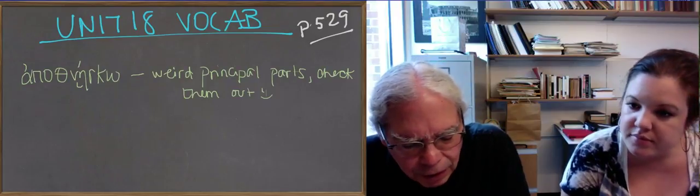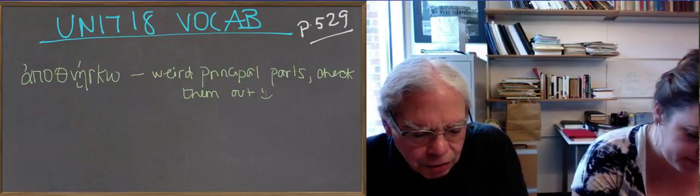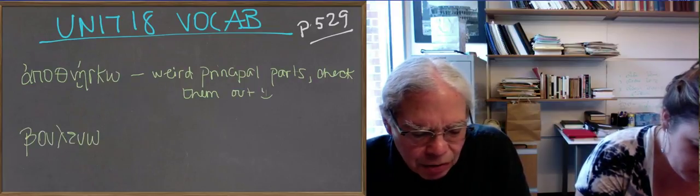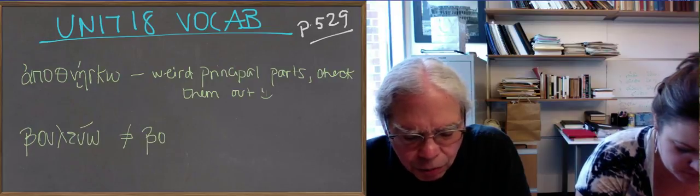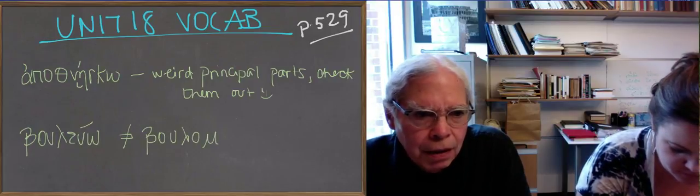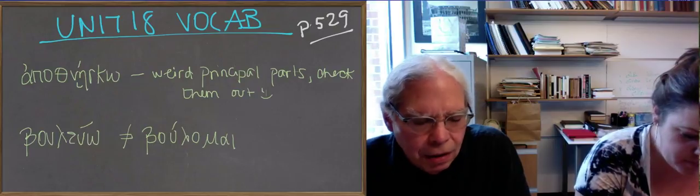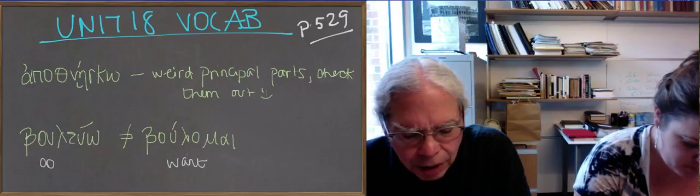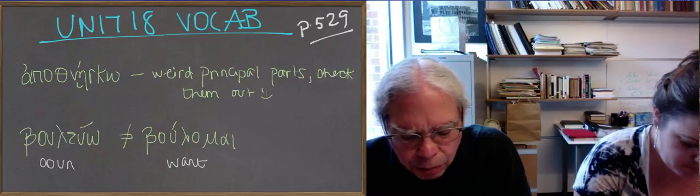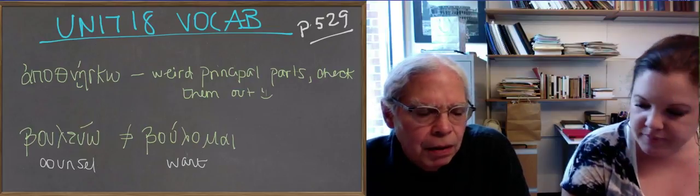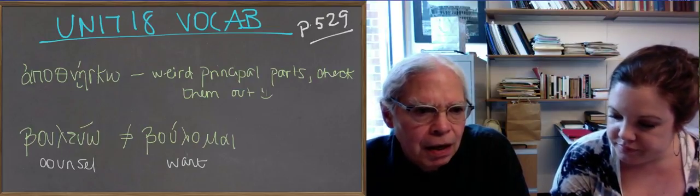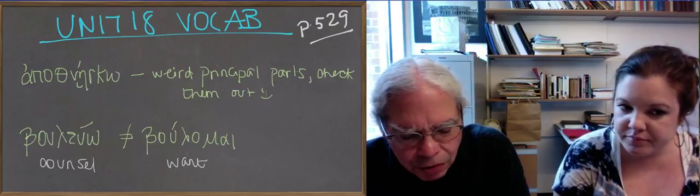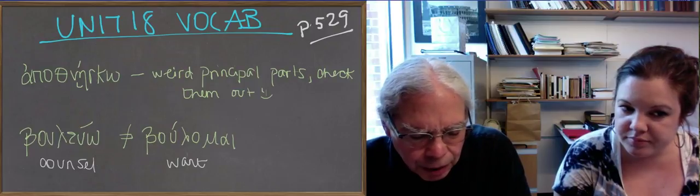Then they give us the verb buleuo, which looks like the verb bulamai. Indeed it's derived from the same noun, bule, which means counsel or plan. It means to plan or counsel. Bulamai means to want or wish. So bulamai is middle only, buleuo is active, and can be middle and passive. It means to plan, to deliberate on. It's really common in the middle too, bulewomai, meaning to take counsel, to make a plan with other people, to join in planning something with somebody else.